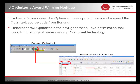Some of you who might be Borland Optimizer users might recognize the user interface. Embarcadero acquired the Optimizer development team and licensed the Optimizer source code from Borland with the CodeGear acquisition just last year. Embarcadero J-Optimizer is the next-generation Java optimization tool based on that original award-winning Optimizer technology.